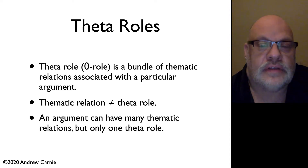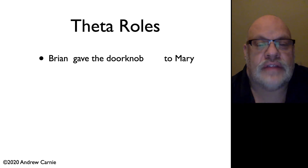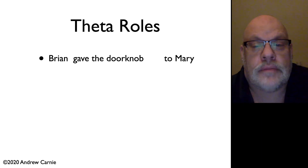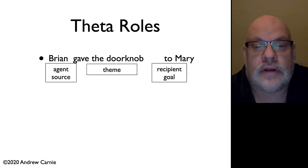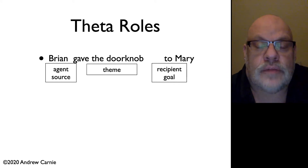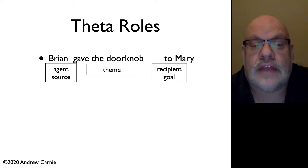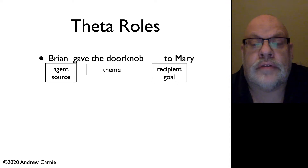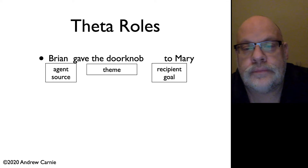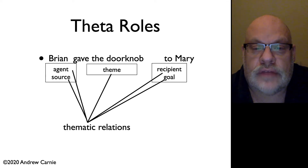Let's look at an example. We have the sentence: Brian gave the doorknob to Mary. Here are the thematic relationships associated with each of these arguments. Brian is the subject, and it's associated with two thematic relations: agent and source. The doorknob is the theme, and it is associated with one thematic relationship, the theme. And Mary is both a recipient and a goal. These are the thematic relations.